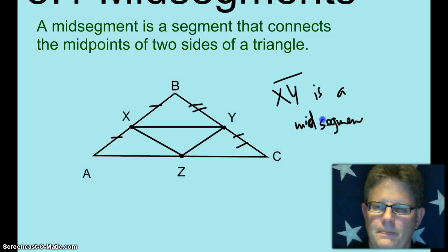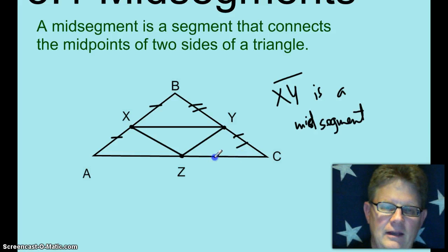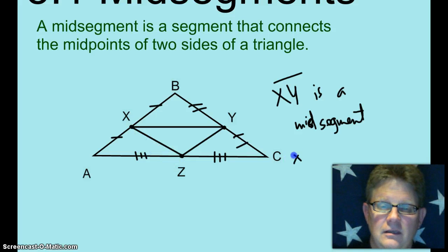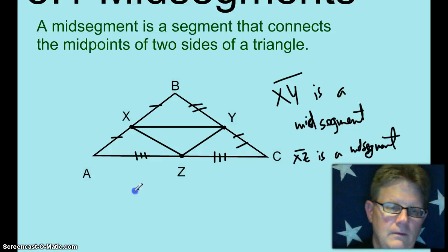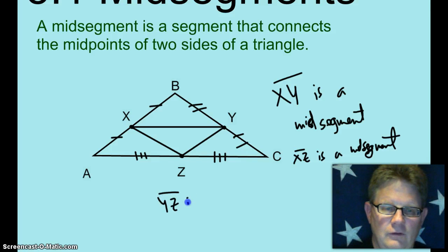And if I had these triple-tick marked off, then you could tell me that XZ would also be a mid-segment. And YZ is also now a mid-segment — it joins the midpoints of two sides of a triangle.